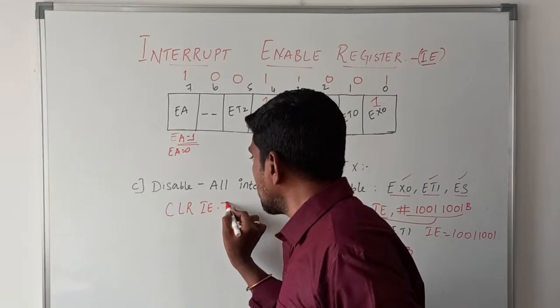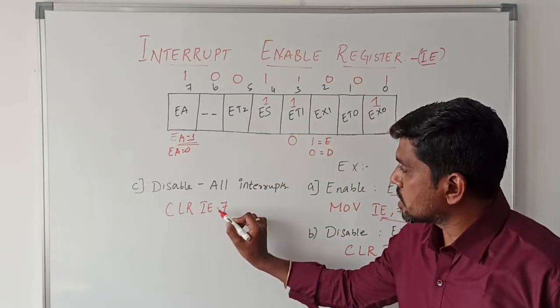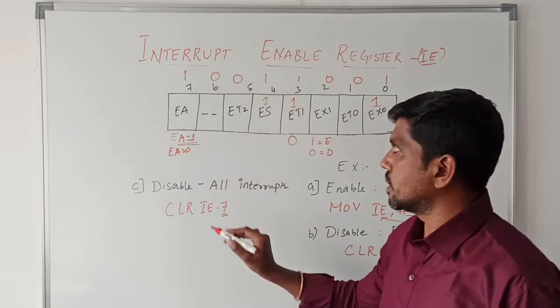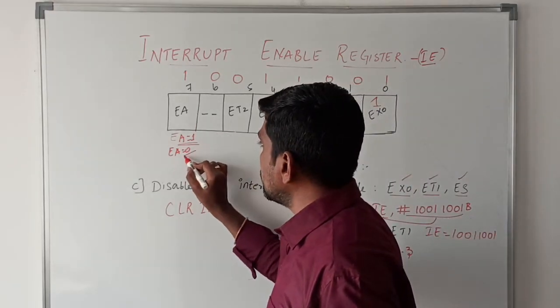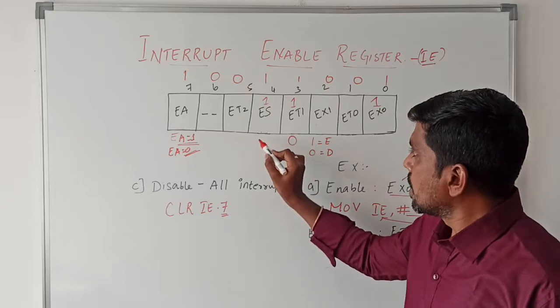You write only one command to clear all the interrupts: CLR IE dot 7. IE is the register. In this IE register, only we focus on the 7th bit. This 7th bit alone is cleared, so 7th bit value now goes to 0. After execution of this instruction, all the bits go to 0, just clearing all the interrupts.